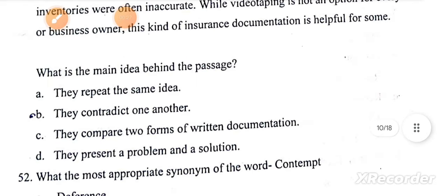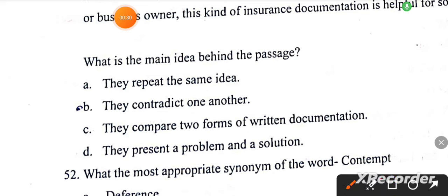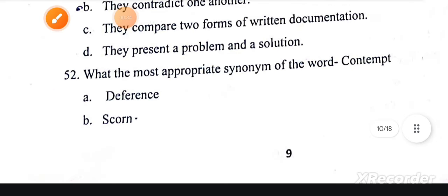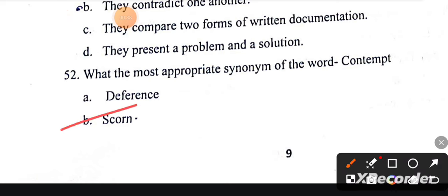This passage asks what is the main idea behind the passage. The correct answer is B, they contradict one another. Next, what is the most appropriate synonym of contempt? The correct answer is B.